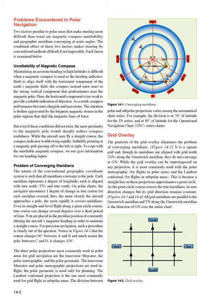As the great circle course crosses the true meridians, its true direction changes but its grid direction remains constant. Figures 14-3 and 14-4: all grid meridians are parallel to the Greenwich meridian, and TN along the Greenwich meridian is the direction of GN over the entire chart.